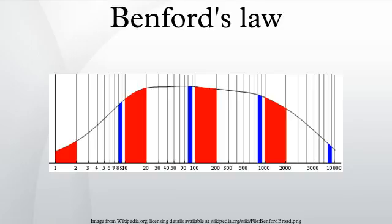Other distributions that have been examined include the Muth distribution, Gompertz distribution, Weibull distribution, Gamma distribution, log-logistic distribution, and the exponential power distribution, all of which show reasonable agreement with the law. The Gumbel distribution, whose density increases with increasing value of the random variable, does not show agreement with this law.